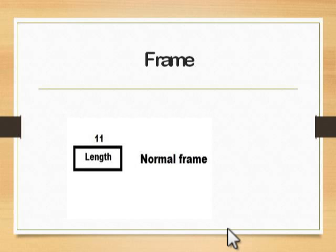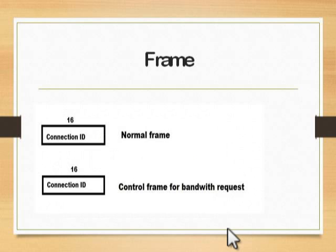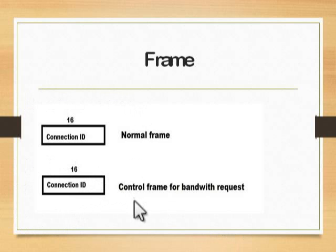The length field indicates the frame length, including the header. The connection identifier is designed to provide a unique connection identifier value for each subscriber. Every time a subscriber sends something, the connection identifier indicates the connection that the subscriber is referring to.